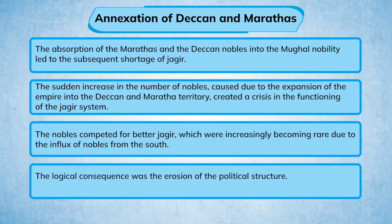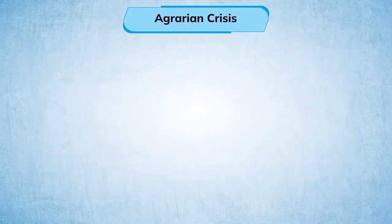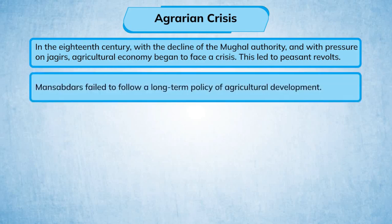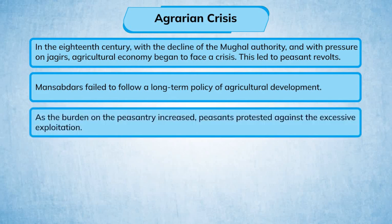The logical consequence was the erosion of the political structure and an agrarian crisis. In the 18th century, with the decline of Mughal authority and pressure on Jagirs, the agricultural economy began to face a crisis, leading to peasant revolts. Mansabdars failed to follow a long-term policy of agricultural development, and as the burden on the peasantry increased, peasants protested against the excessive exploitation.